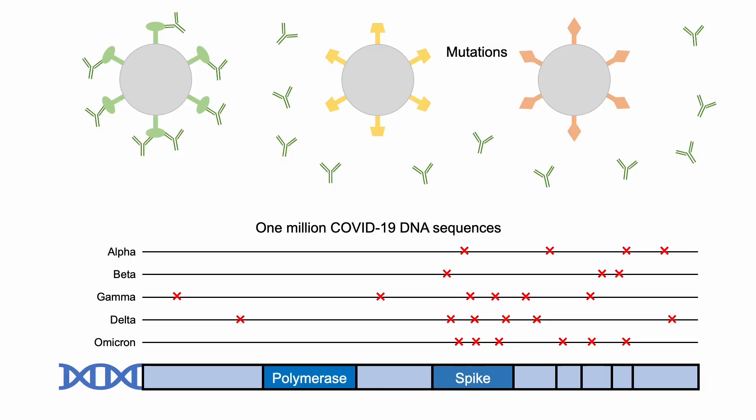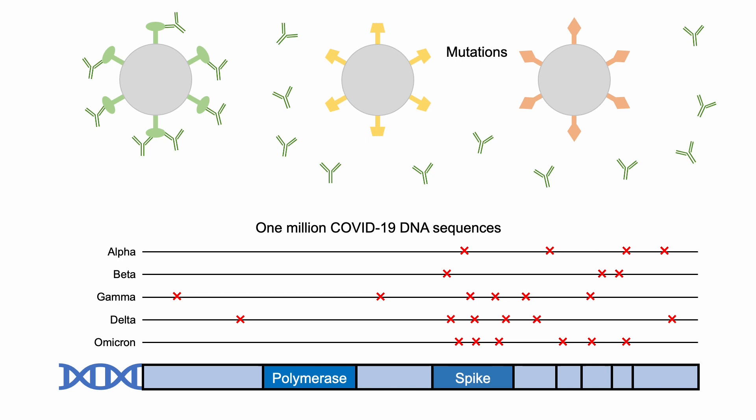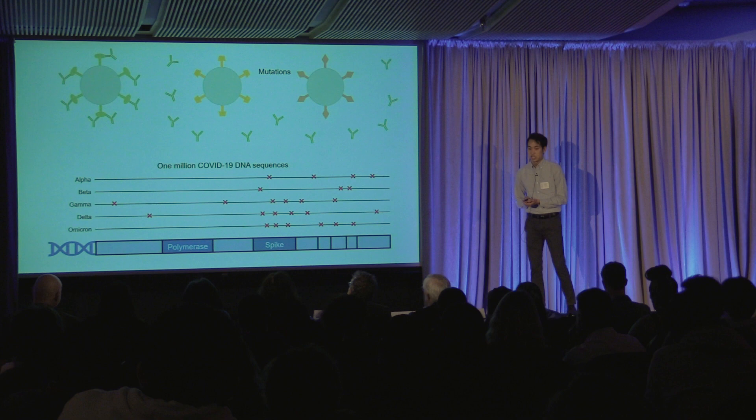Next, I looked at where the mutations were occurring, shown in red. I discovered that there were some proteins that had significantly more mutations than others. The spike protein had a lot of mutations, and the polymerase did not.